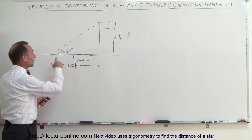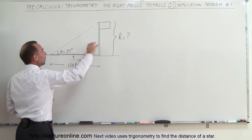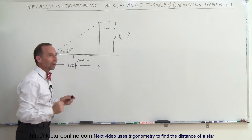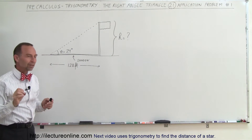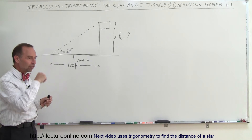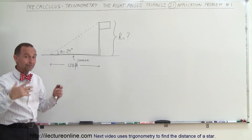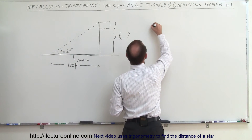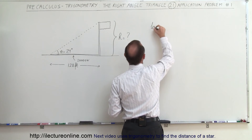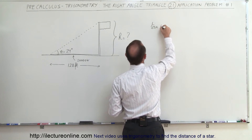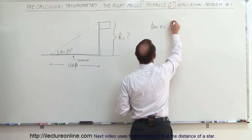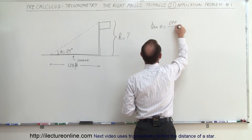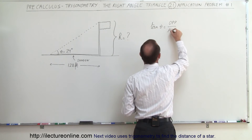Notice here's the angle theta. We're looking for the opposite side and we know the adjacent side. So what trigonometric identity relates the opposite side, the adjacent side, and the angle? The tangent of theta. So we say to ourselves: the tangent of theta is equal to the ratio of the opposite side divided by the adjacent side.